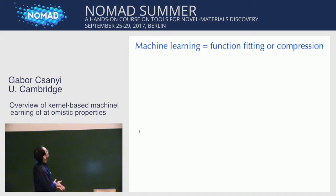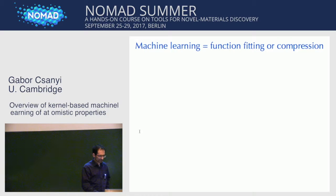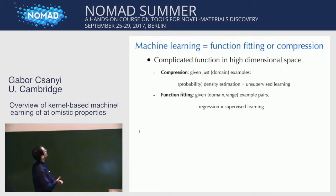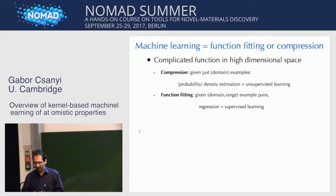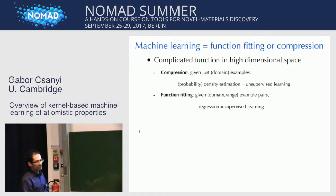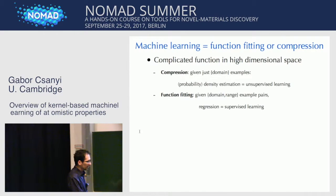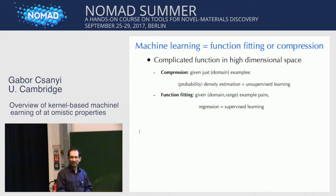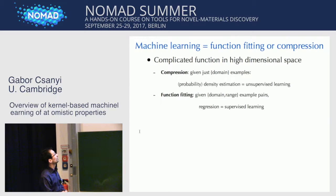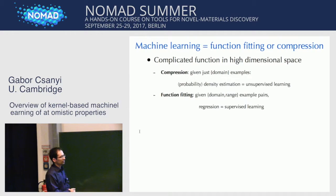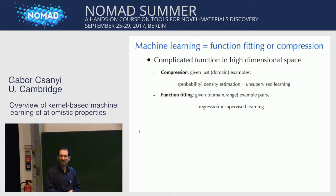Machine learning is about function fitting or compression — really just two different tasks that you need to do. Both of them are to do with very complicated functions. When you're doing compression, you're given in some very high dimensional space examples of where that function is interesting, but you don't get to see what the function is. That's usually called probability density estimation, or other names of it are unsupervised learning.